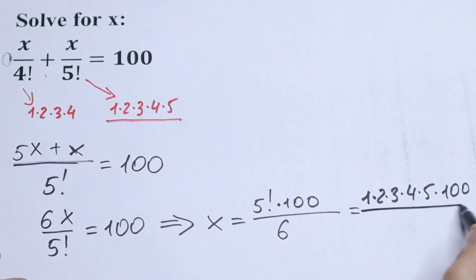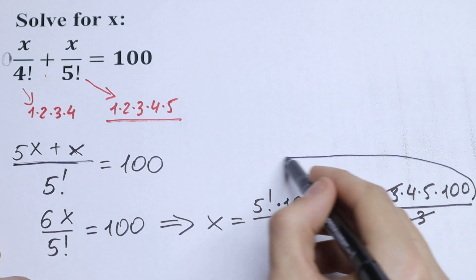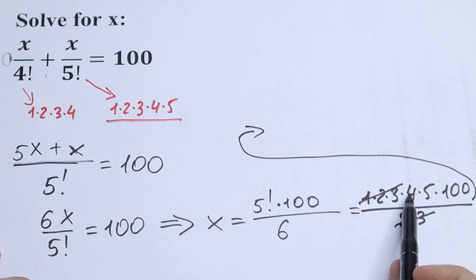And dividing all by 6. But I want to write this 6 as 2 times 3, so as you can see we can cancel the 2 and the 3.